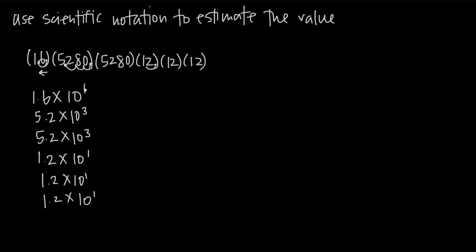Now, remember, we're just using scientific notation to estimate. So what we can do is round these decimal values to the nearest whole number. So instead of 1.6, we could call this 2. Instead of 5.2, we could call it 5, so 5 and 5. Instead of 1.2, we'll do 1, 1, and 1.